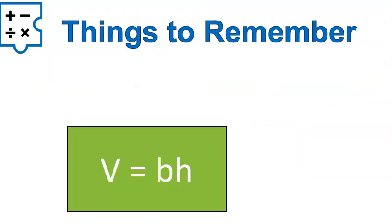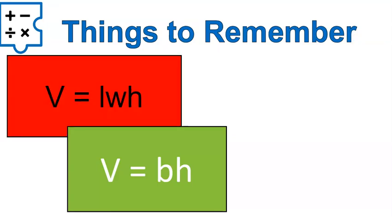A couple of things to remember: you can use area of the base times the height, or length times width times height for rectangular prisms. Be prepared to do both. You're going to practice both on the worksheet, and you will see both types in the quiz and practice questions. Good luck and have a wonderful day.